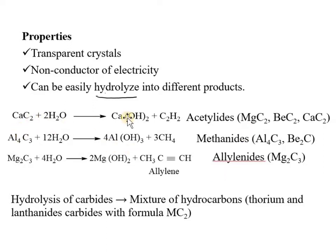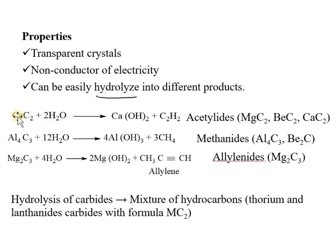Let's look at hydrolysis reactions. If we consider calcium carbide, when it undergoes hydrolysis, it produces acetylene. So calcium carbide is an acetylide carbide. These carbides — such as magnesium carbide, beryllium carbide, and calcium carbide — are called acetylides.